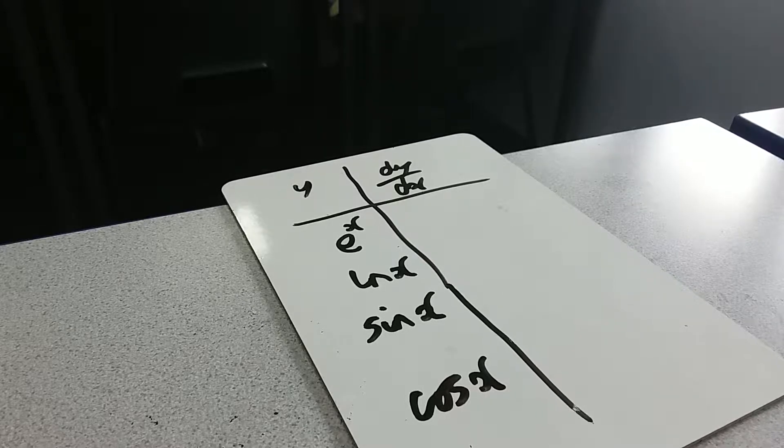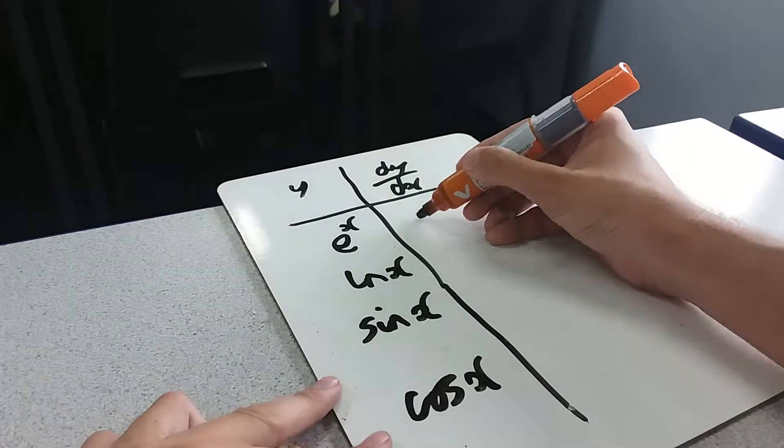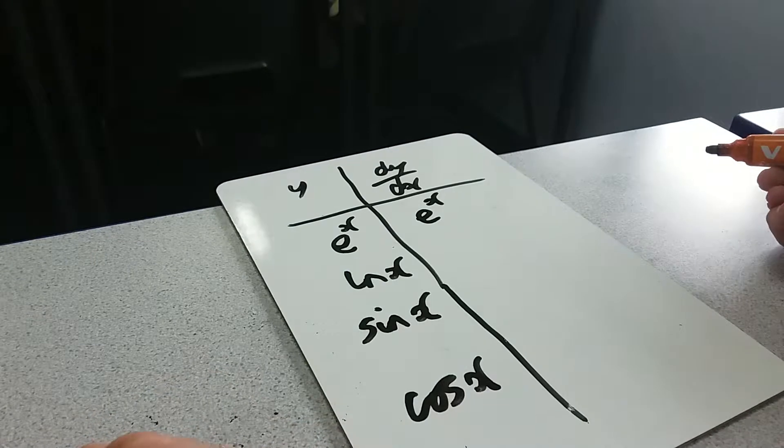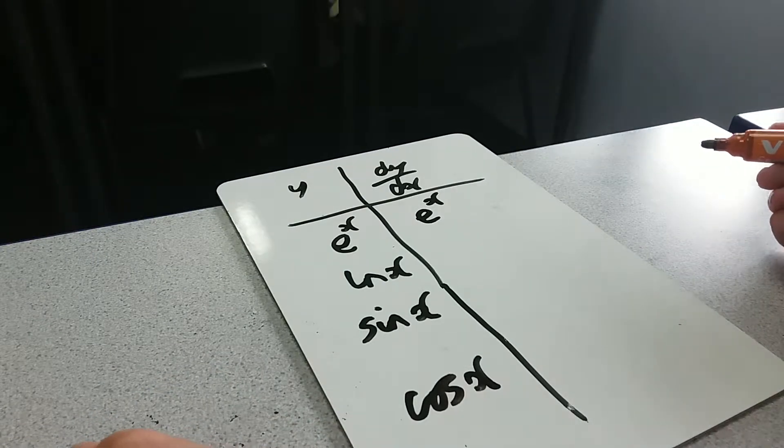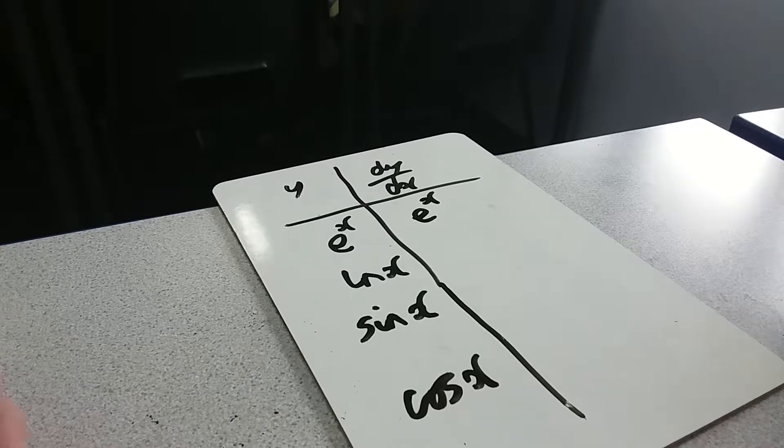Starting off with e to the x, e to the x is the nicest function to differentiate. It literally just goes to itself. It's the definition of e to the x. It's the thing which has its own gradient. So every time you differentiate first derivative, second derivative and so on forever, you always just get e to the x.